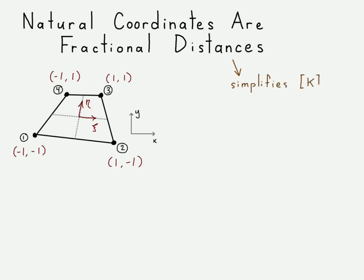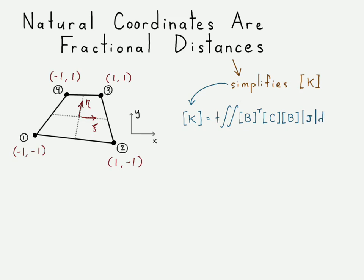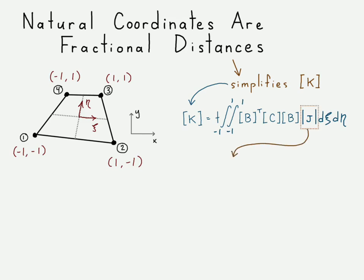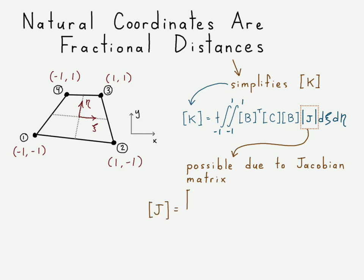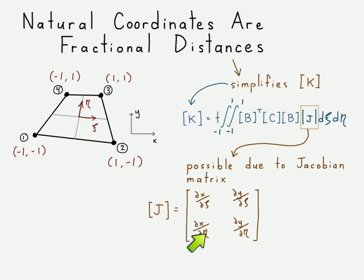The beauty of natural coordinates is that they simplify the stiffness matrix equation. Instead of an integration with unknown limits, we make a substitution and keep the integration in terms of natural coordinates, which just go between negative one and one. This is all possible due to the Jacobian matrix, which is the mapping mechanism between our natural coordinate system and our global coordinate system. The equation for the Jacobian matrix involves derivatives of our positions x and y with respect to natural coordinates xi and eta.